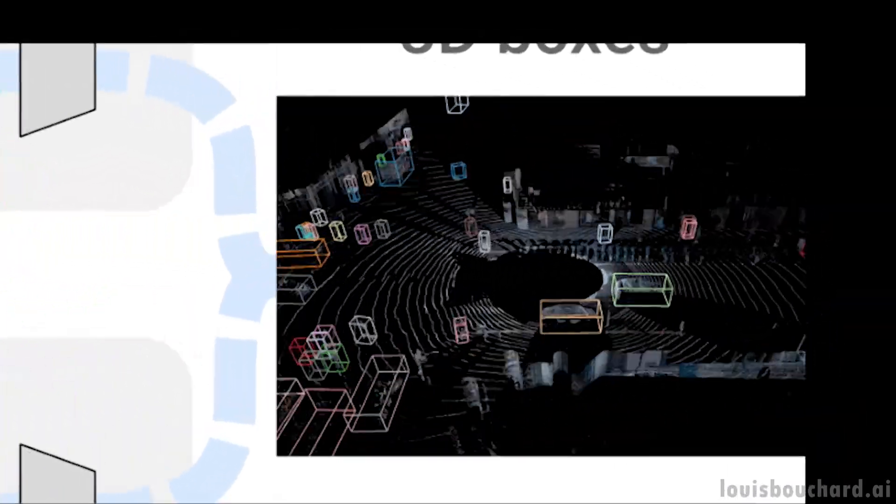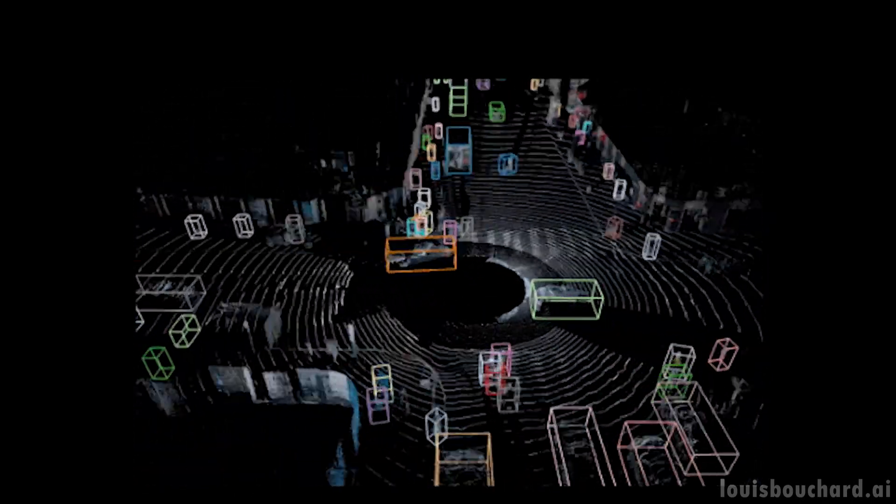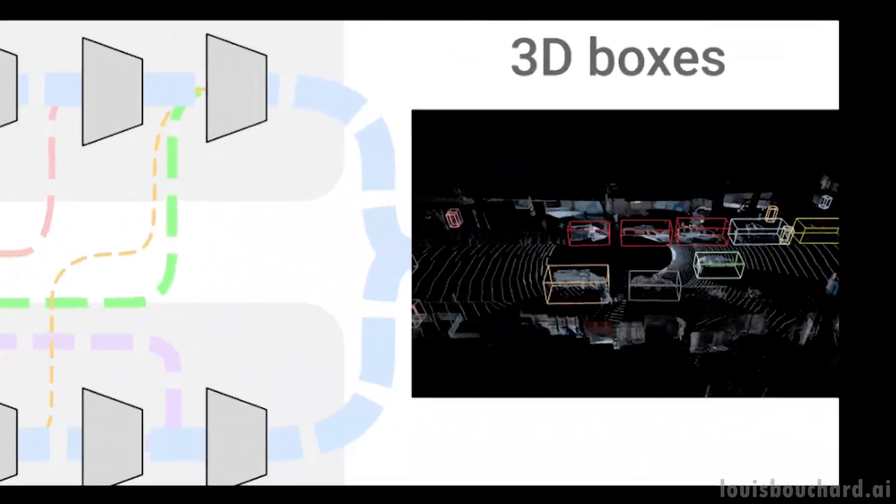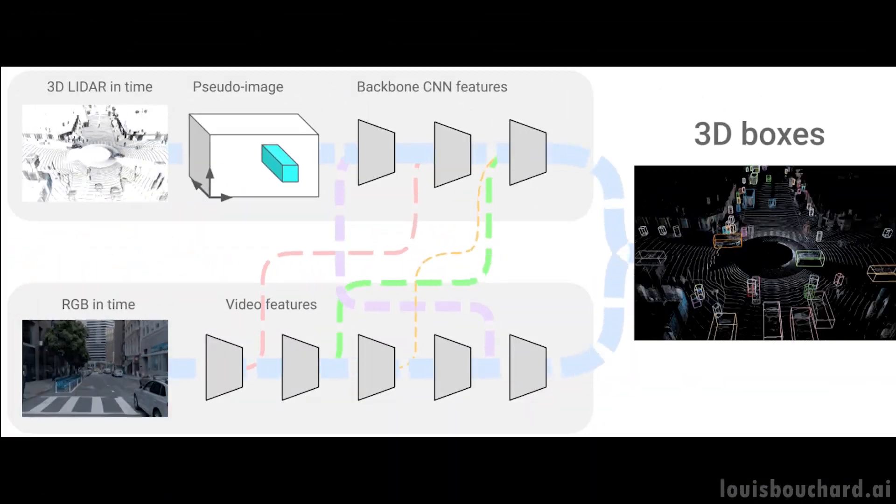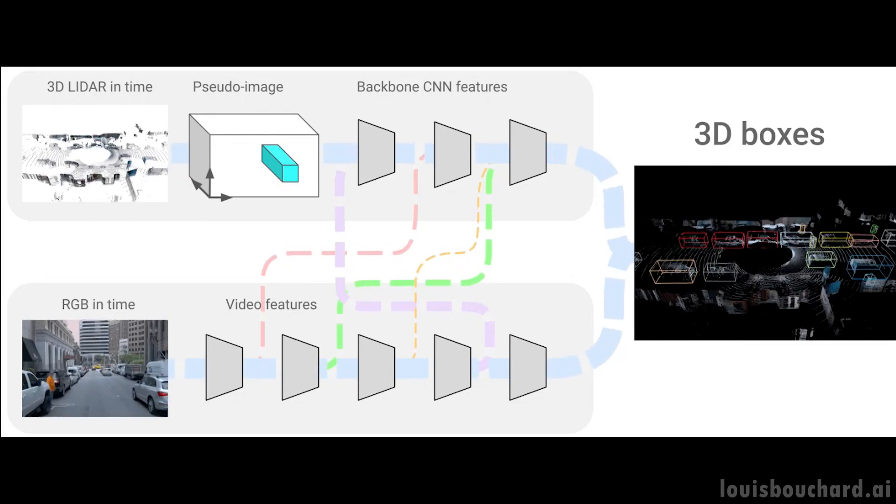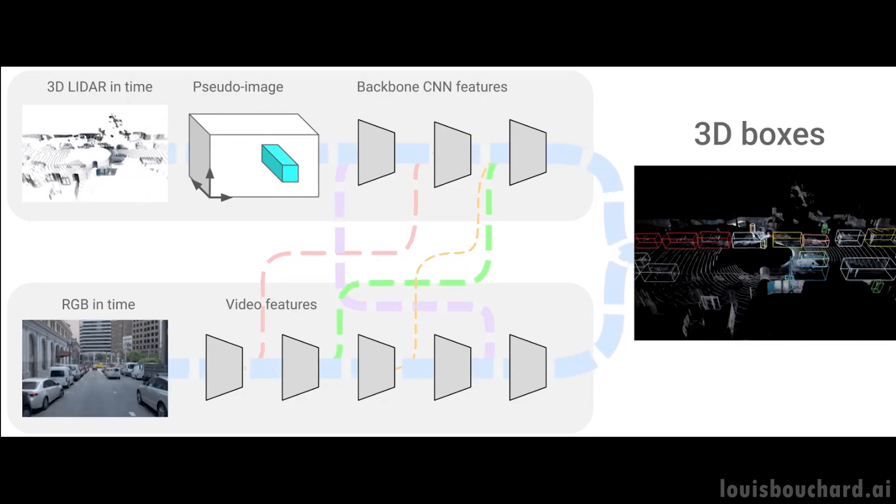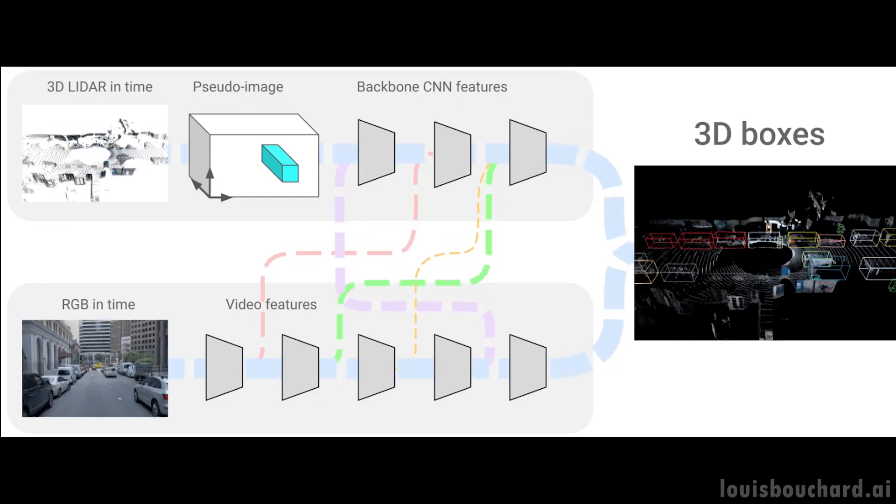This is how the Waymo vehicles see our world. It can process 32 point clouds in time and 16 RGB frames within 164 milliseconds, producing better results than other methods. This might not ring any bell, so we can compare it with the next best approach that is less accurate and takes 300 milliseconds, almost double the time to process.